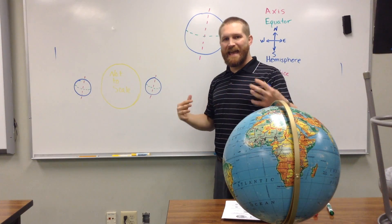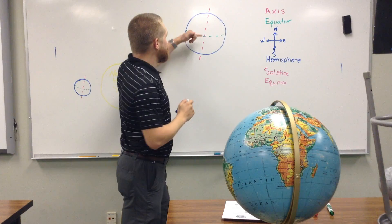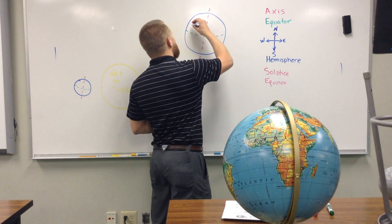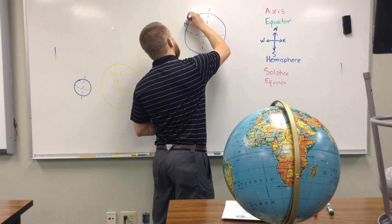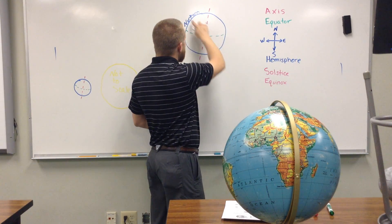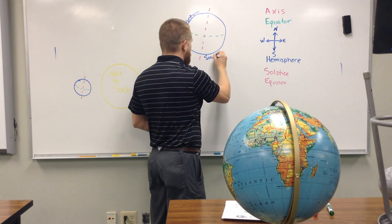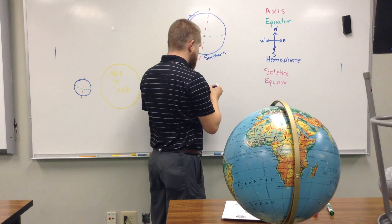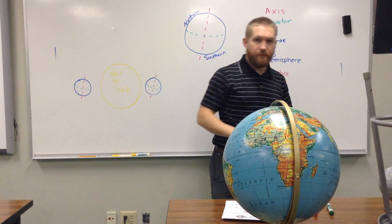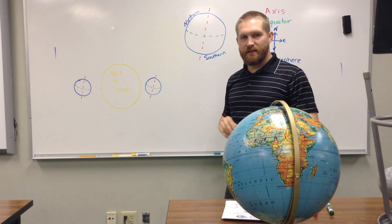And that tells us about the hemisphere. So, the northern hemisphere is the hemisphere above the equator, and the southern hemisphere is the one below the equator. Okay, so, depending on which hemisphere is facing towards the sun, that gives us our seasons.